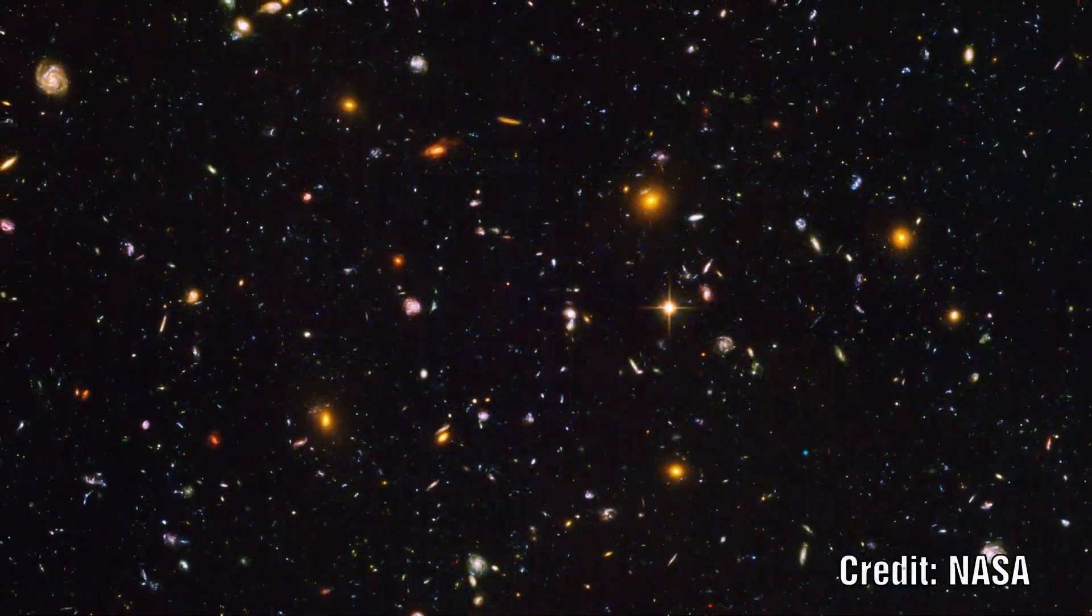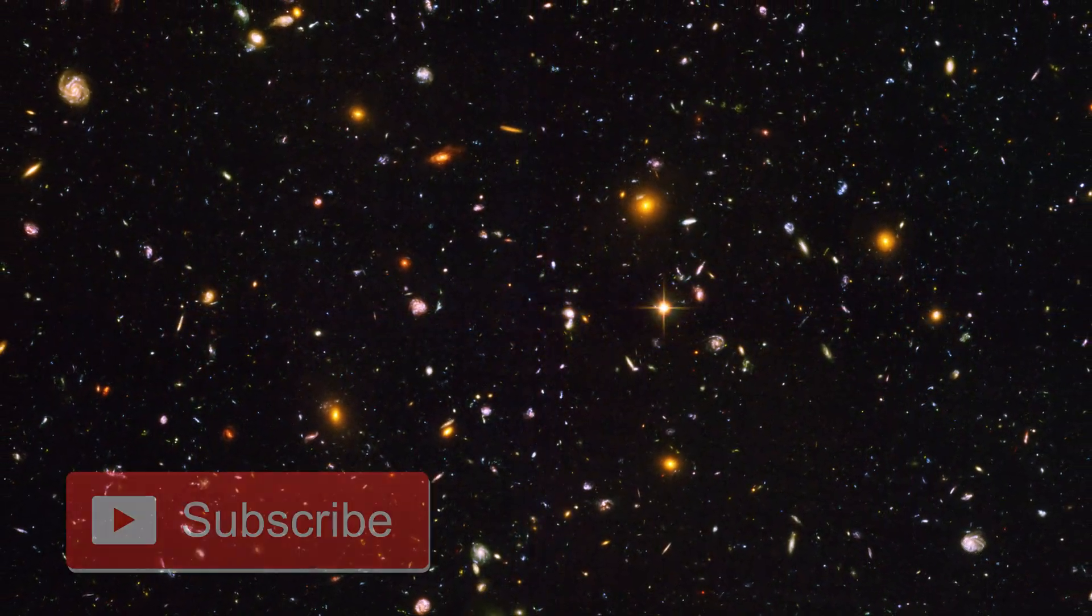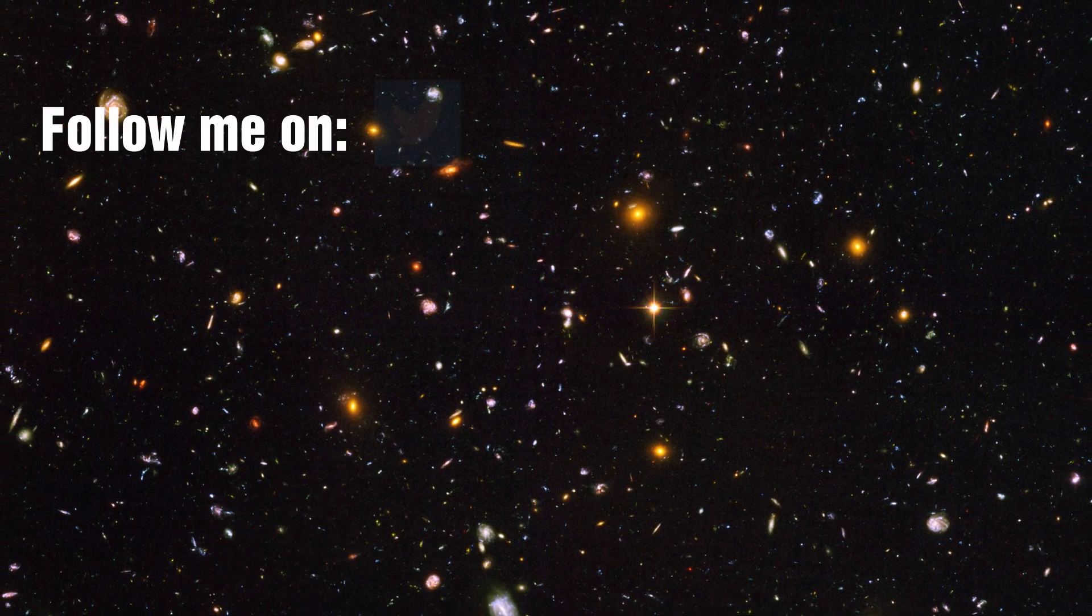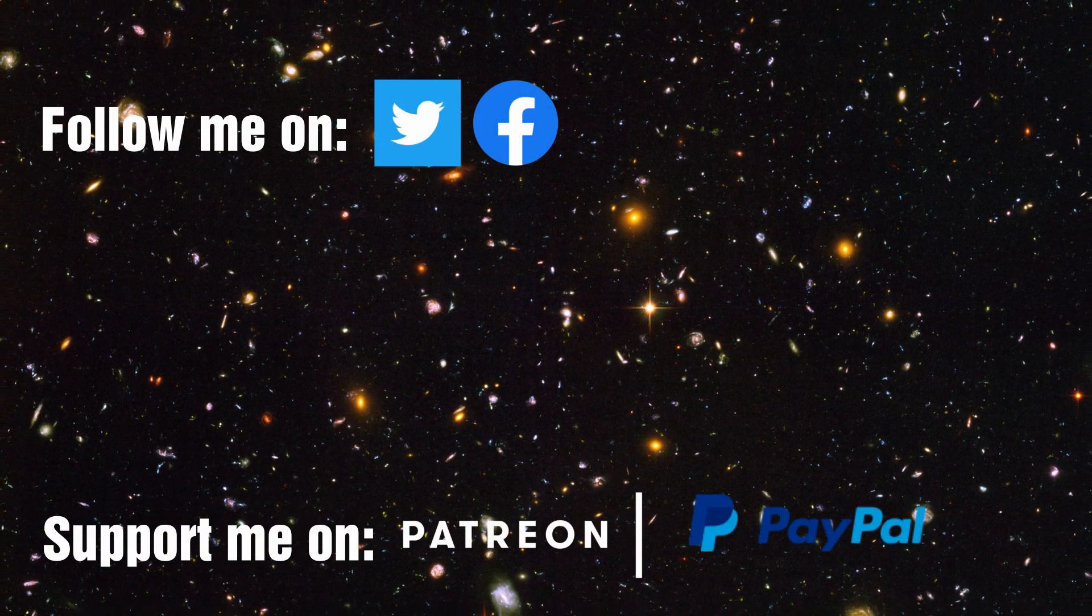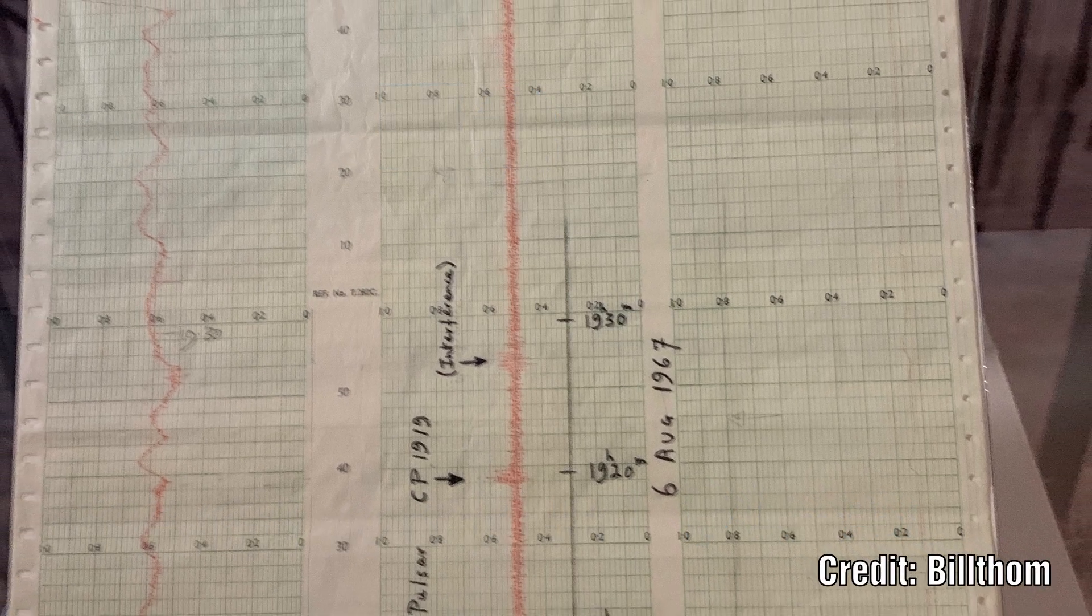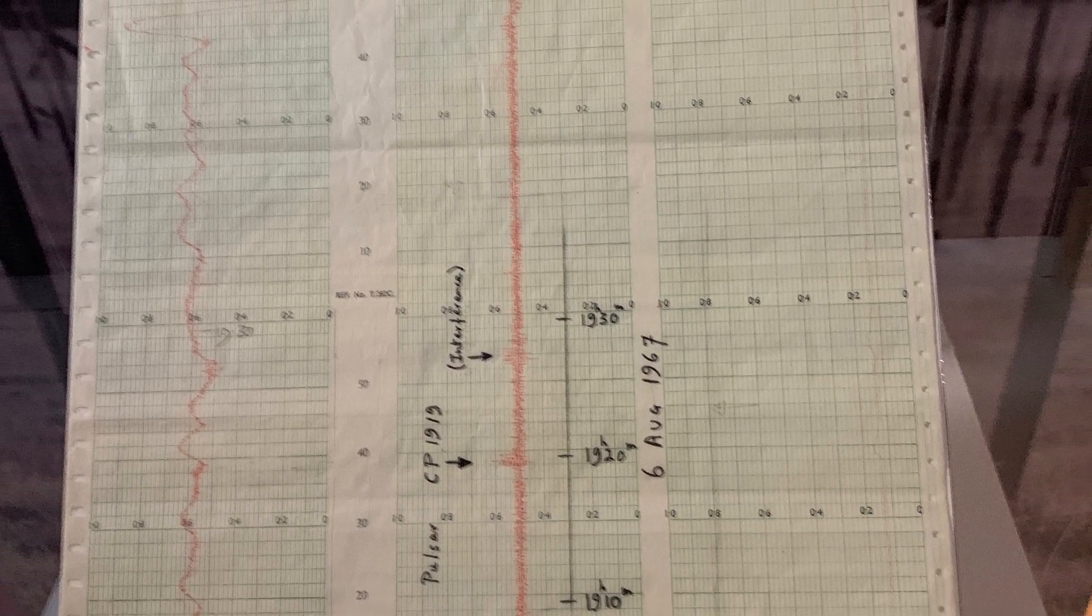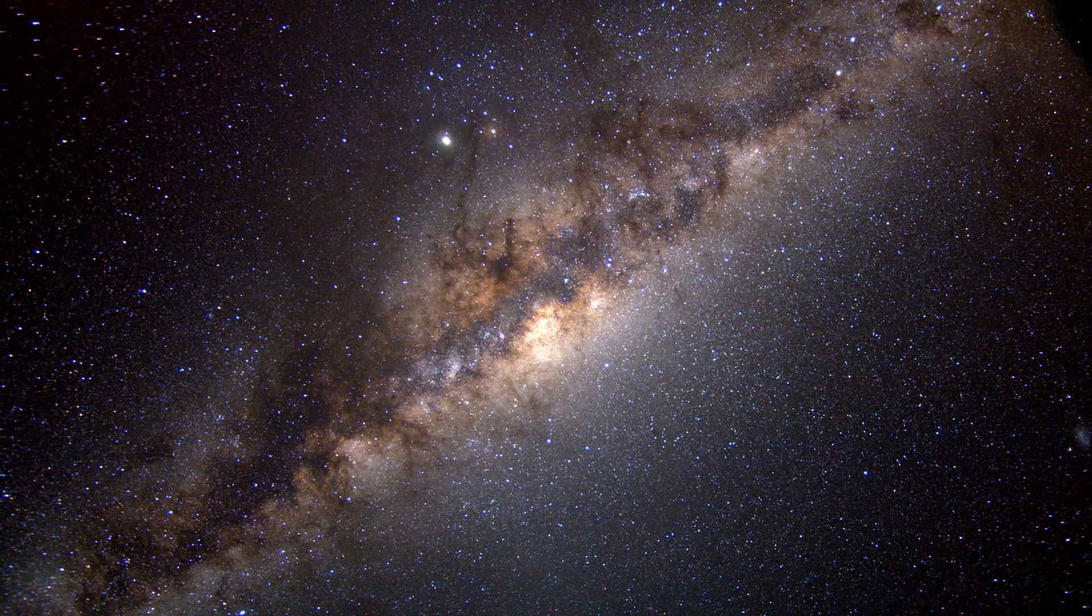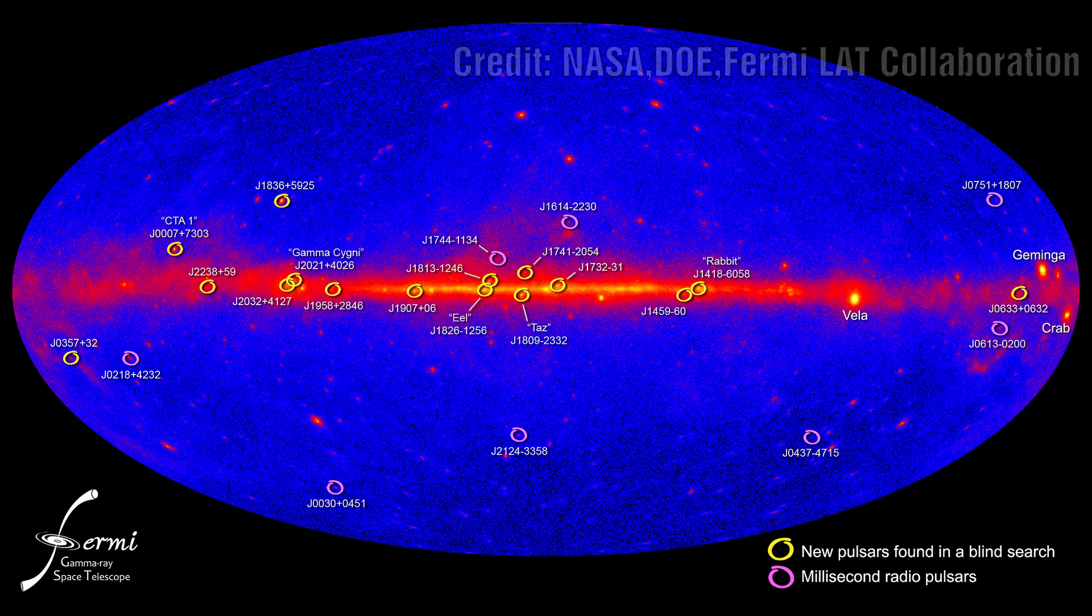The first pulsars were detected back in 1967 when an investigation was carried out by Bell and Hewish of extragalactic radio sources. They were able to measure a repeating signal every 1.337 seconds. This source seemed to be coming from within our own galaxy. Soon more of these objects were detected and all seemed to be originating from within our galaxy.